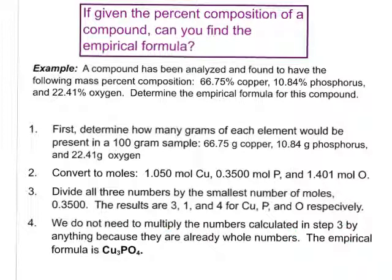Since those results are already whole numbers, we don't need step 4. Our empirical formula is Cu3PO4 — copper with subscript 3, phosphorus, and oxygen with subscript 4. Just remember, we follow the same steps as when calculating the empirical formula from mass, but we first convert percentages to grams by assuming a 100 gram sample.